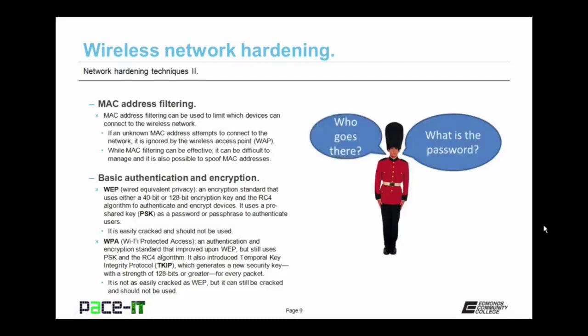First up in basic authentication and encryption for wireless networks is WEP, or Wired Equivalent Privacy. It's an encryption standard that uses either a 40-bit or a 128-bit encryption key in the RC4 algorithm to authenticate devices and encrypt transmissions. It uses a pre-shared key as a password or passphrase to authenticate users. WEP is easily cracked and should not be used. As a matter of fact, WEP can be cracked in minutes.